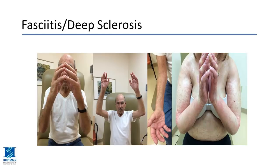For patients with deep sclerosis, we regularly test flexibility and range of movement in clinic. We ask patients to do the prayer sign or Buddha sign and measure how much range of movement they have, asking them to elevate arms at the shoulders or flex and extend their ankles. Once treatment begins, this is a way to assess if they're responding.